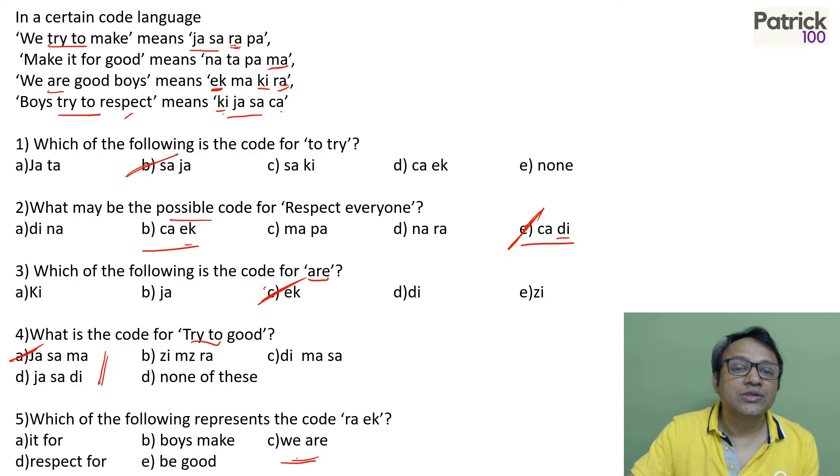If you look at RA is in the first and RA is in the third. Common in first and third is we. So automatically you can make out RA is we. Yes satisfies. So C option is the answer.